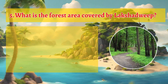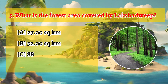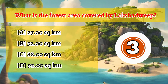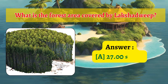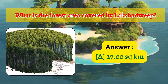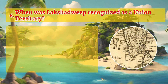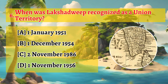Question 5: What is the forest area covered by Lakshadweep? Option a: 27 km², b: 32 km², c: 88 km², d: 92 km². Question 6: When was Lakshadweep recognized as a Union Territory? Option a: 1st January 1951, b: 1st December 1954, c: 2nd November 1986, d: 1st November 1956.